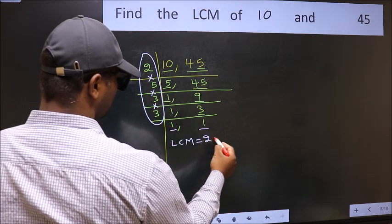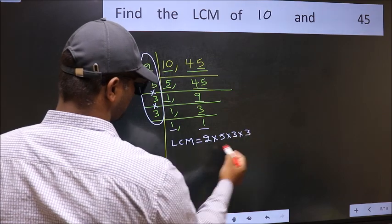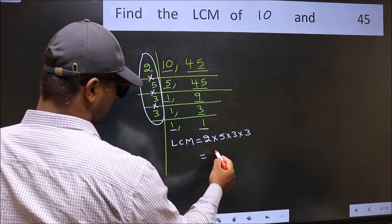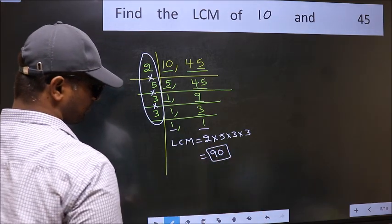That is 2 times 5 times 3 times 3. When we multiply these numbers, we get 90. This is our LCM. This is what we will see.